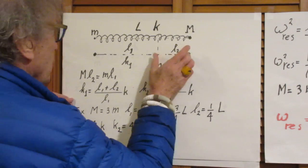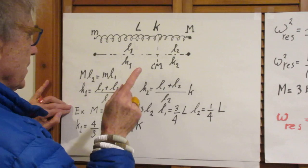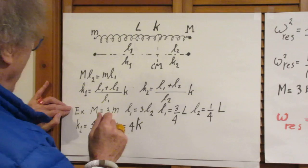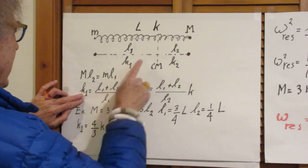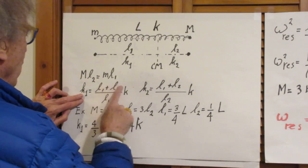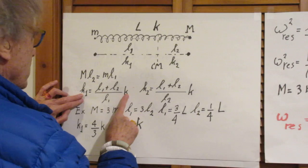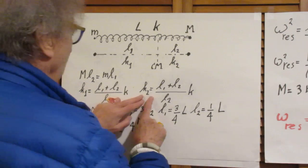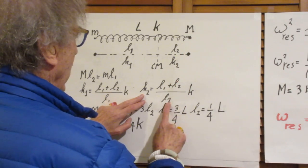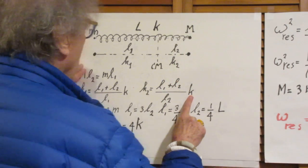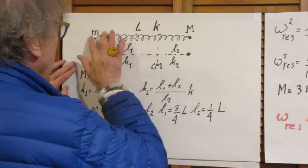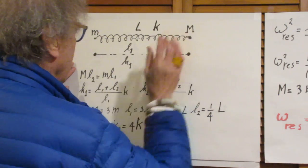So the shorter the spring is, the higher the spring constant. That is quite obvious. So it follows immediately that K1 is the total length L1 plus L2 divided by L1 times K. And K2 is the total length from here to here divided by L2 times K. Remember, in this situation that I had drawn, the spring was completely relaxed. So L is its relaxed length.